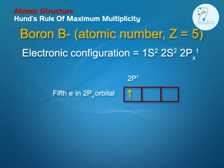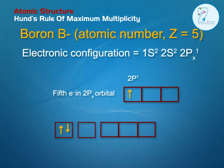Examples: Boron B, atomic number Z equals 5. Electronic configuration equals 1s2, 2s2, 2px1. The fifth electron enters in the 2px orbital.